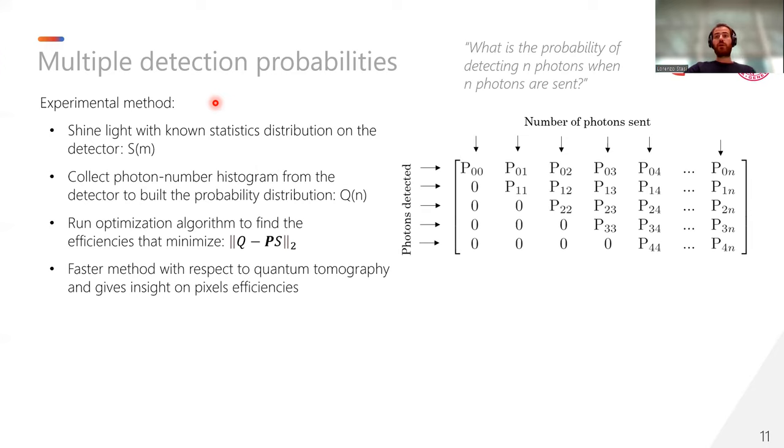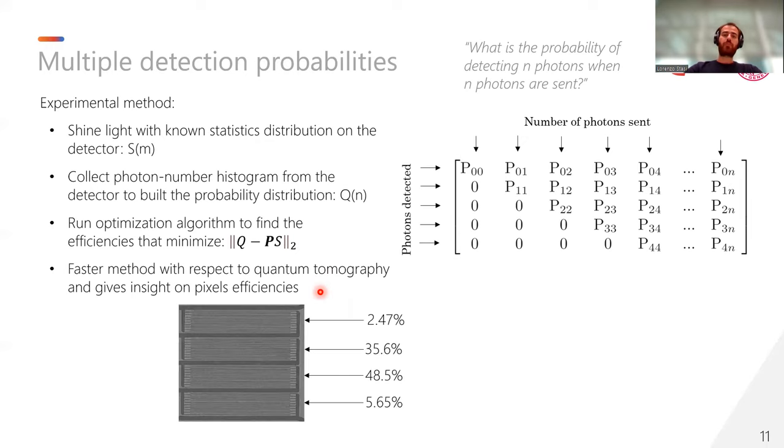Since we do not have direct access to the pixel efficiencies since they are connected in parallel, we needed to do a step more. So, we shine light on the detector with known statistics, and we employ Poissonian light with a specific mean photon number per pulse. Then we collect the photon number distribution generated by the detector, and then we run an optimization algorithm that aims to find the pixel efficiencies that minimize the Euclidean norm. Such method is much faster with respect to quantum tomography approach because it requires only one set of data rather than a lot, as quantum tomography does. And also, it can give insight on the pixel efficiency values.